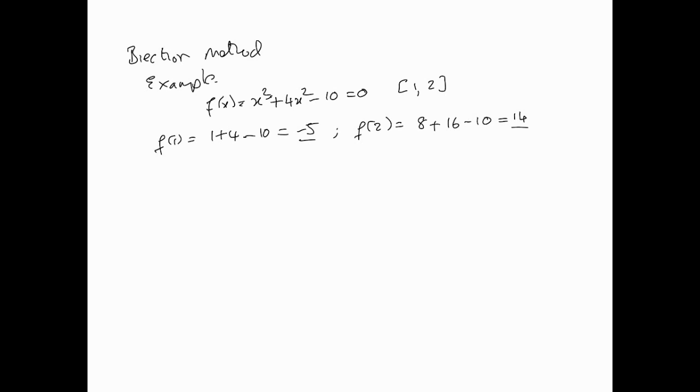So the way we proceed is to calculate our first guess at the root. Our first guess at the root is the midpoint of 1 and 2. The formula is a + (b - a)/2. So 1 + (2 - 1)/2, the point between 1 and 2 is, in fact, 1.5. So our r₁, our first guess at the root is 1.5.